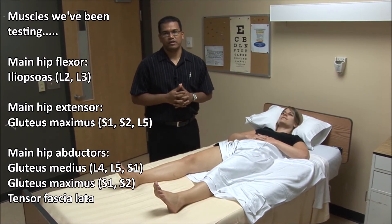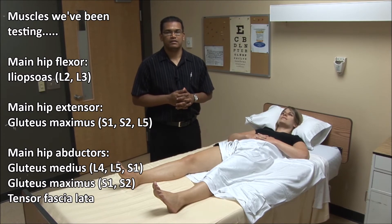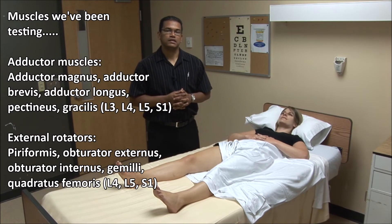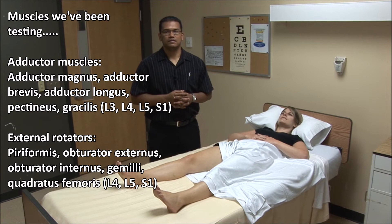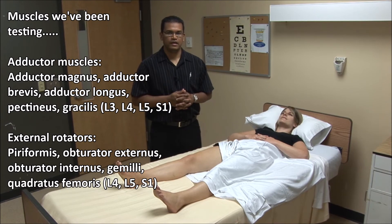The main hip flexor is the iliopsoas, supplied by L2 and L3. The main hip extensor is the gluteus maximus, supplied by S1, S2, and L5. The main hip abductors are the gluteus medius supplied by L5, also L4 and S1; the gluteus maximus supplied by S1 and S2; and the tensor fasciae latae. The adductor muscles include the adductor magnus, adductor brevis, adductor longus, pectineus, and gracilis, supplied by L3, L4, L5, and S1. The main external rotators are the piriformis, obturator externus, obturator internus, the gemelli, and the quadratus femoris, supplied by L4, L5, and S1. The main internal rotators are the gluteus medius, gluteus minimus, and tensor fasciae latae, supplied by L4, L5, and S1.